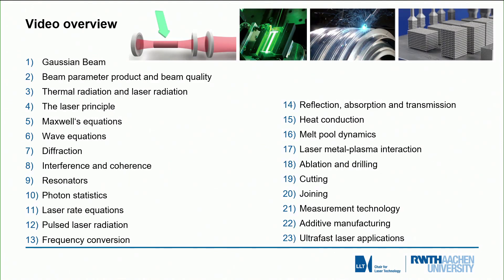Here you see an overview of the individual videos. On the left you can see the videos which deal with the lasers, the beam sources; on the right you see the videos which deal with the applications. We start with the general appearance of a laser beam, which is usually a Gaussian beam, and then we talk about the beam parameter product and the beam quality — the spatial beam quality.